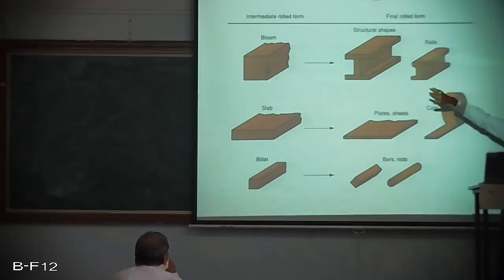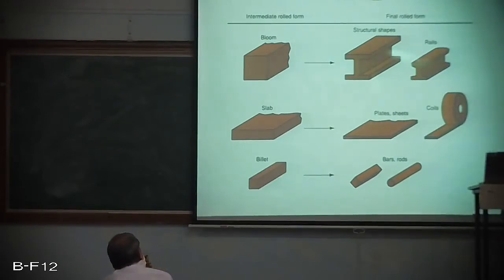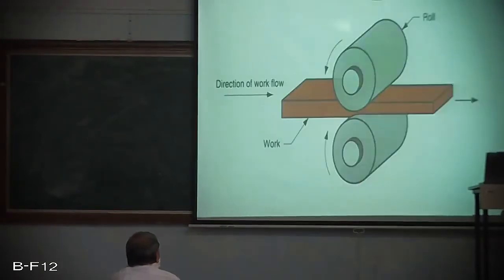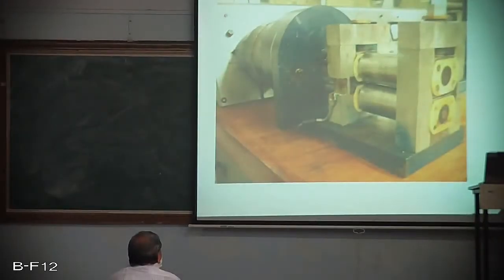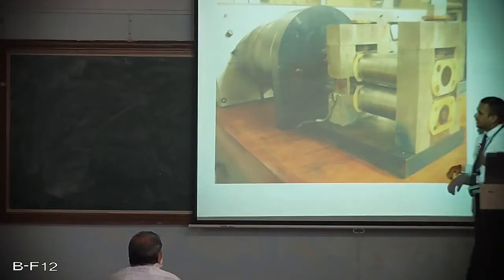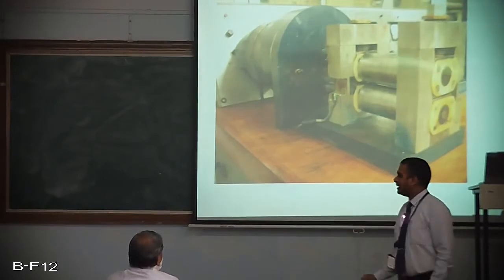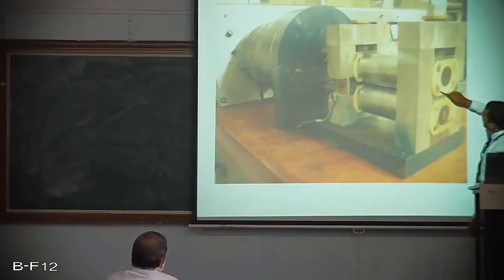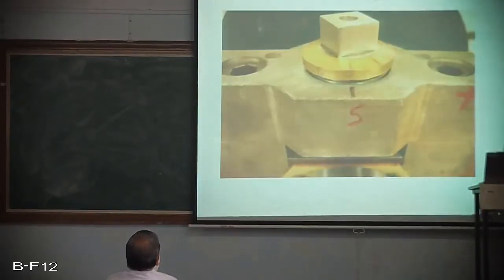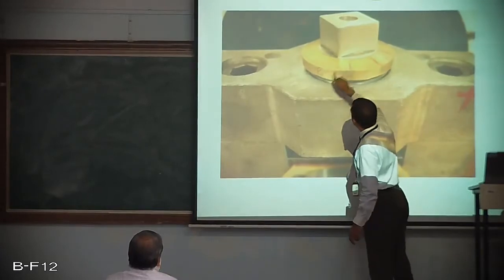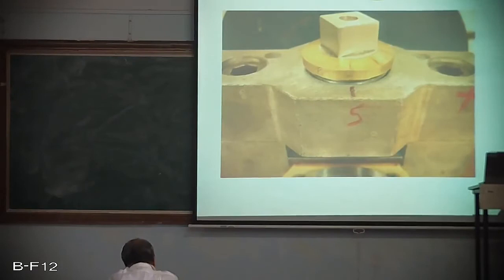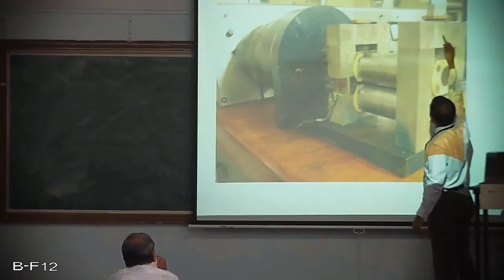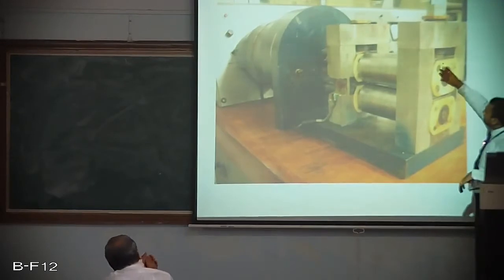Using bloom we get structural shapes such as I-shapes and rails. Slabs are used to make plates, sheets, and coils. Billets can be converted into bars or rods. Here is an example of a simple roller used for rolling sheet metals, where the gap between the two rollers can be adjusted using a mechanism at the top — just by rotating a nut, the gap between the rollers is controlled.